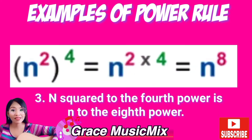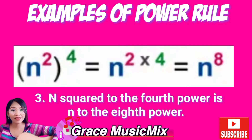Example number three: n squared to the fourth power is n raised to two times four, which is n to the eighth power.